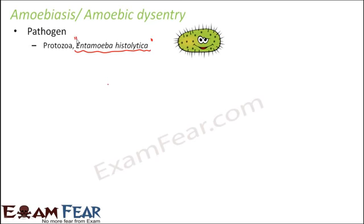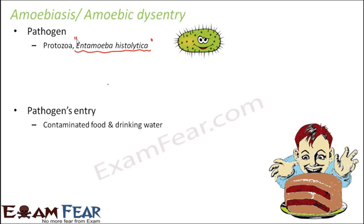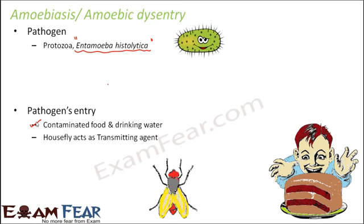How does this pathogen enter inside the body of human beings? It generally enters through contaminated food and drinking water, but it also has a transmitting agent involved — and that transmitting agent is the housefly.